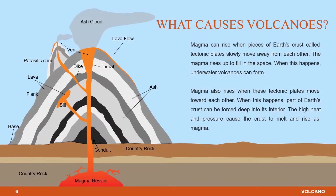Magma can rise when pieces of Earth's crust, called tectonic plates, slowly move away from each other. The magma rises after filling in the space. When this happens, underwater volcanoes can form.